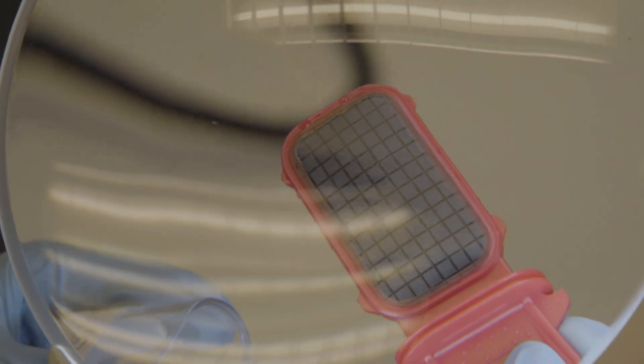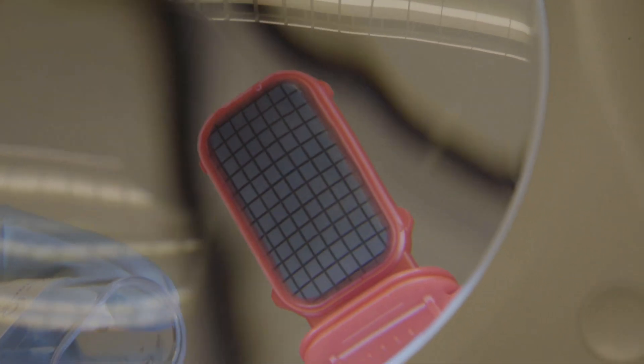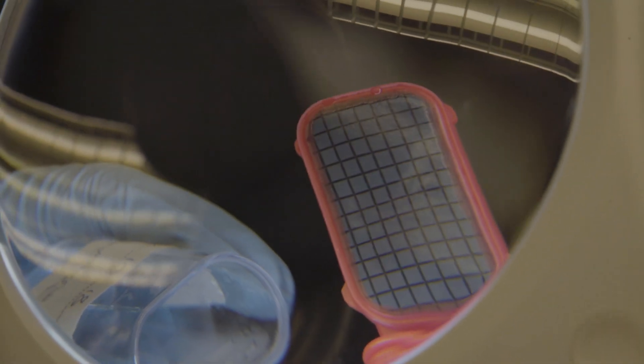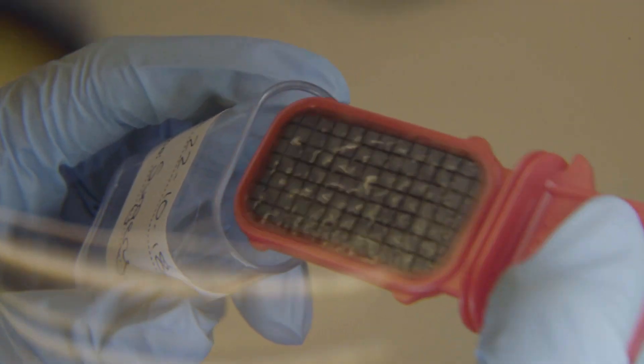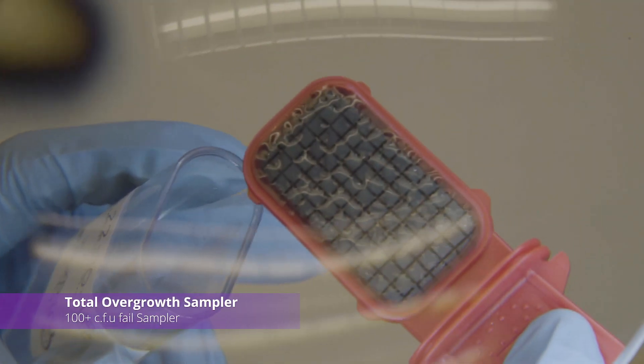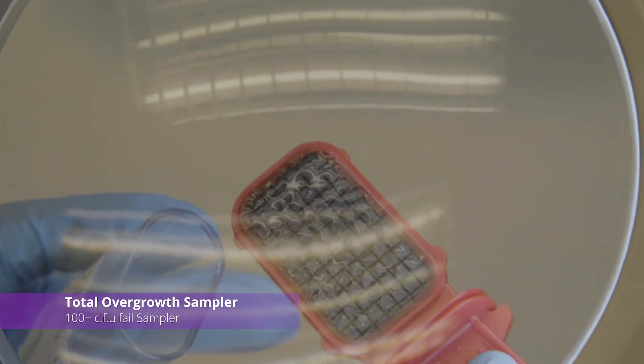In some cases, especially where no control measures have been in place, a complete overgrowth can occur. This uniform film of organisms can be mistaken for a no growth.